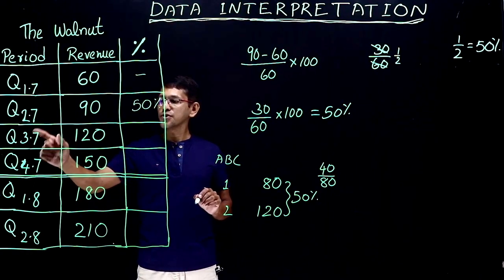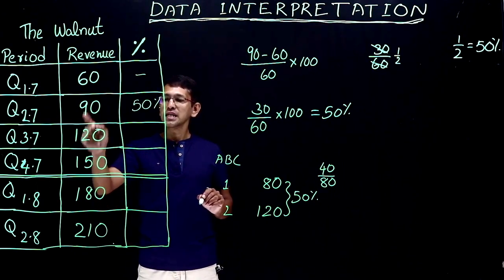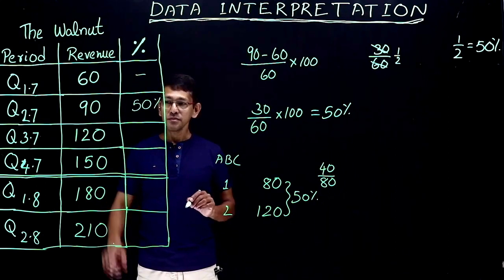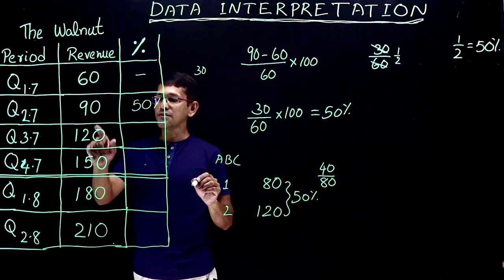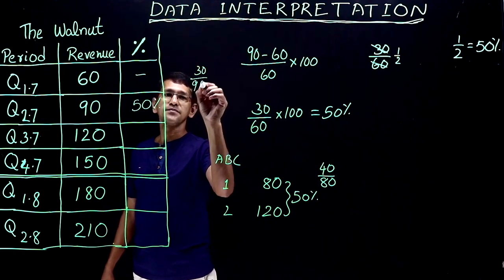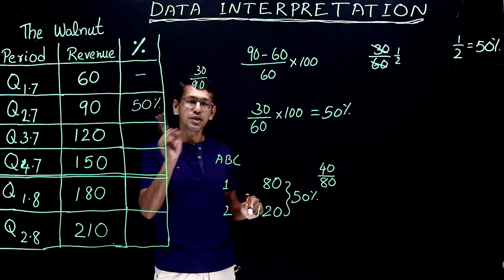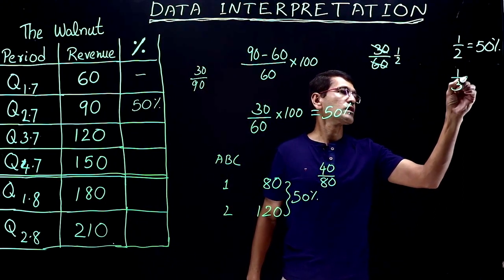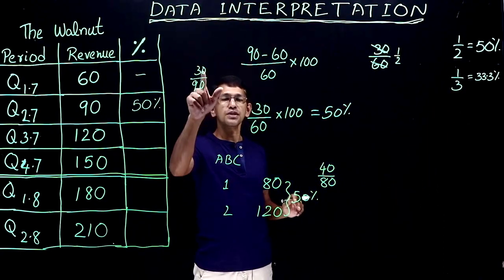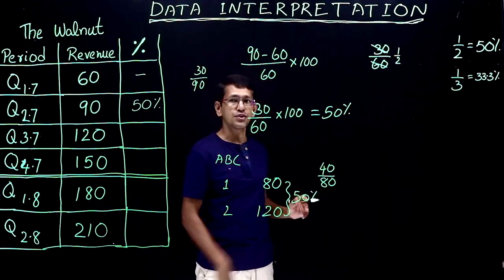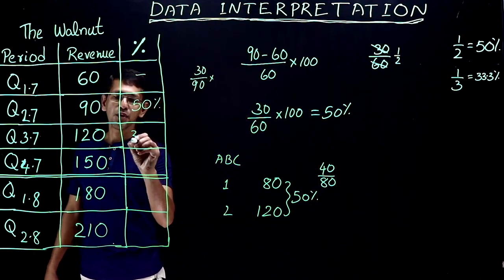Quarter 2 2017 to quarter 3 2017: 90 became 120. The increase is 30, and the base year is 90. So 30 divided by 90 equals 1/3. 1/3 of 100 is 33.33 percentage. Every time you see 1/3, that's 33.3 percentage.